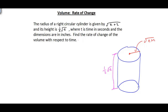We want to find the rate of change of the volume with respect to time. To find the change in the volume, we need to know the formula for volume. The volume for a right circular cylinder is equal to pi times r squared times h — pi times the radius squared times the height of the cylinder.